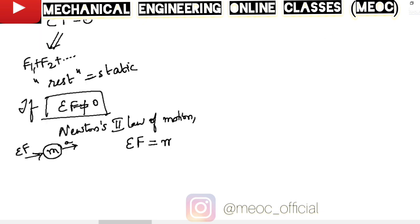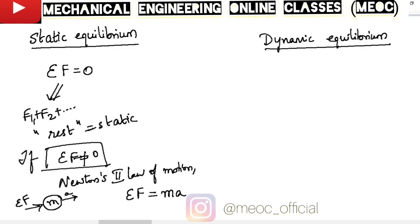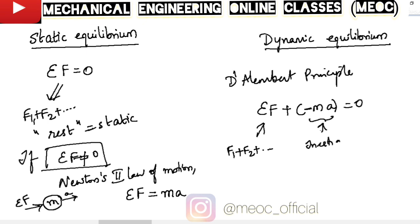This same statement ΣF = MA is rewritten by French mathematician D'Alembert as ΣF + (-MA) = 0, where ΣF is the sum of external forces and -MA is the inertia force. So D'Alembert has written the sum of these two forces - the external forces and the inertia force - as zero.